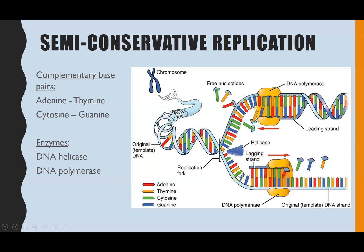We've got a summary diagram here and we're going to go through it step by step. First, I want to point out some key elements. The idea of complementary base pairs — which you would have come across when looking at DNA structure at GCSE and A-level — is important. The four nitrogenous bases are adenine, cytosine, guanine, and thymine. Adenine only bonds with thymine, and cytosine only pairs with guanine. There are also two key enzymes involved: DNA helicase and DNA polymerase.